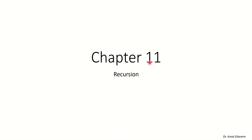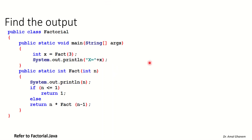We will start our example with recursion using find output. Assume we have from the main method: x equals fact(3). This is a method named fact. It takes an integer n and returns an integer. At the beginning of the method, we output n. If the value of n is less than 1, we return 1. Otherwise, we return n multiplied by the method again with n minus 1.